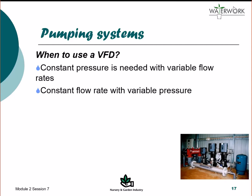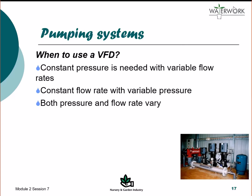When a constant flow rate is needed but the pressure is variable, such as when a well or bore experiences draw down and the water level changes, a VFD increases the pump speed to meet the total pressure required. When both flow rate and pressure are variable — such as when multiple irrigation systems with different operating requirements are used simultaneously or when irrigation zones are at different elevations — the VFD will ramp up and down to meet the irrigation requirements.